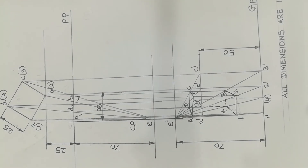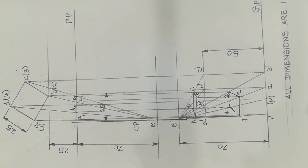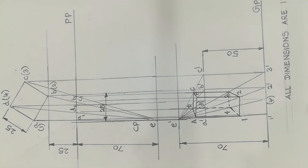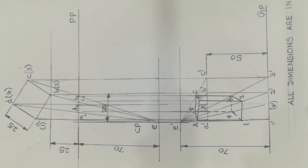MM means millimeter. The diagram is here, and this link is in the description. On the right side of the object, the drawing procedure is explained using a marker board and drafter scale. The shape is a rectangle. Thank you.